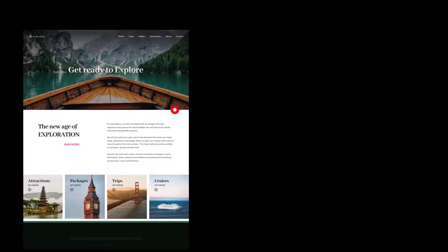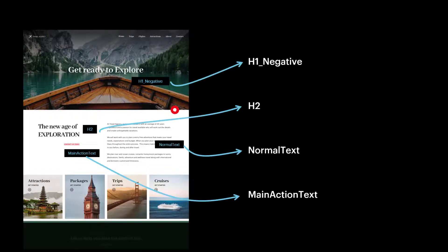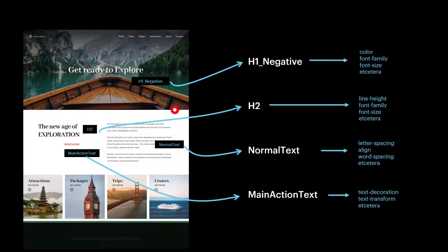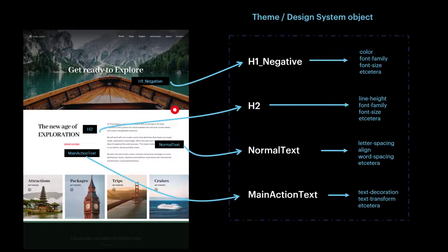The idea is to associate all UI controls or elements in the objects — for example, these four texts — with the style classes identified as significant. Then it'll only be necessary to define the design properties of each of these classes in an object that centralizes them. Until GeneXus 17, this object was the theme, but from then on it can also be its evolution: the design system object. Therefore, the page, which has class names for each control, will only need to know which design system object or theme to go to in order to retrieve the design properties of each one of those classes. That's the way GeneXus separates the structure and content of pages from their design.